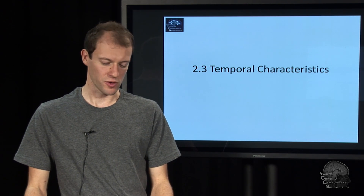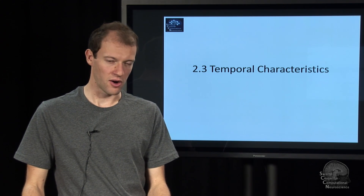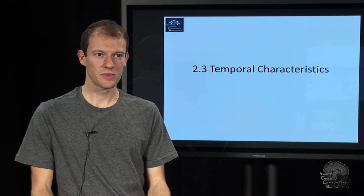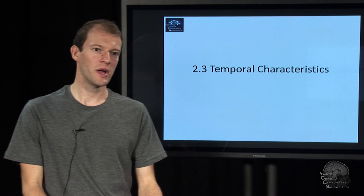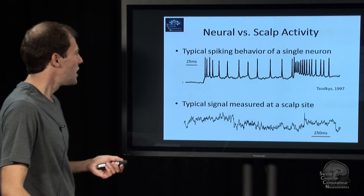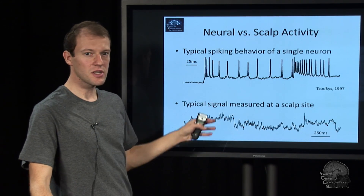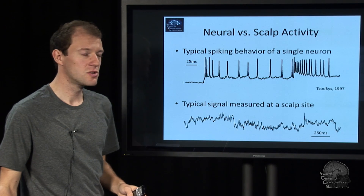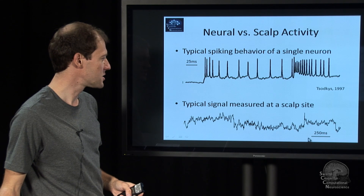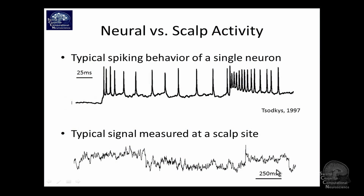This module is on the temporal characteristics of the EEG signal — the time expression. These two graphs are not on the same time scales: this one is 25 milliseconds, and this one is 250 milliseconds. This is what you observe when you put an electrical clamp on one neuron.